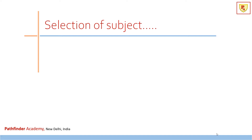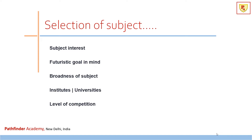In the process of subject selection, keep the following aspects in mind: your interest in specific subjects, your futuristic goal, and the broadness of the subject. For example, if you have two options — MSc Life Sciences from JNU or MSc Biotechnology from JNU — the institute is the same, but when you compare the syllabi, life sciences has broader coverage, so I would suggest going for life sciences.